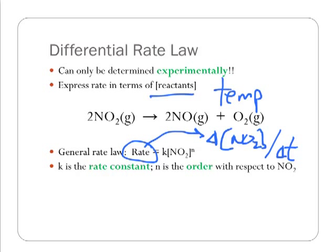So my goal here as I go through and look at the data is I want to find out what the value of the order is and what the value of the rate constant is. And so really this is going to turn into kind of a math problem next.